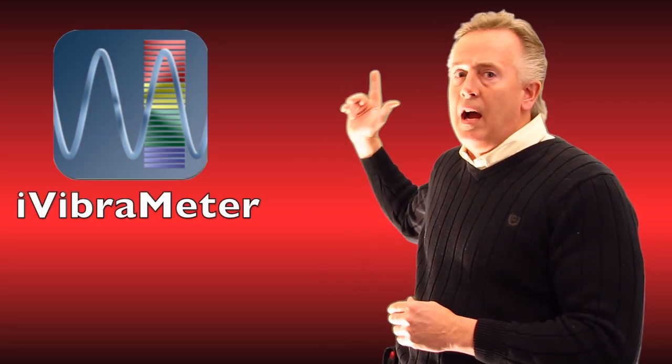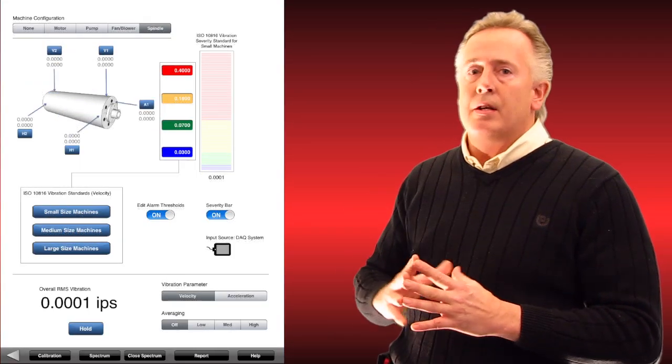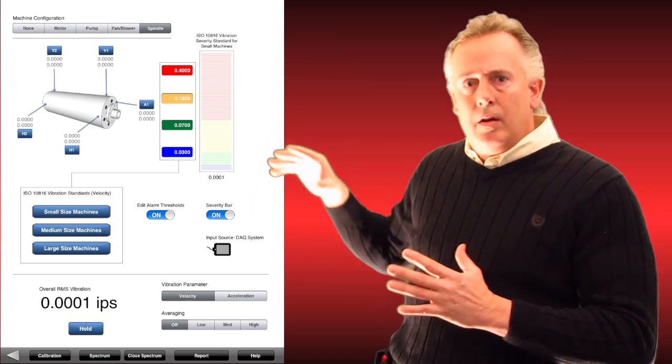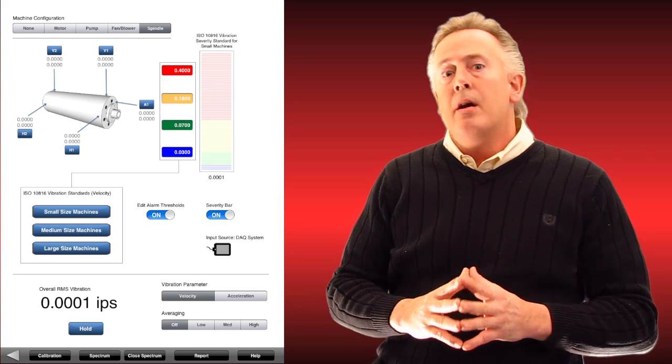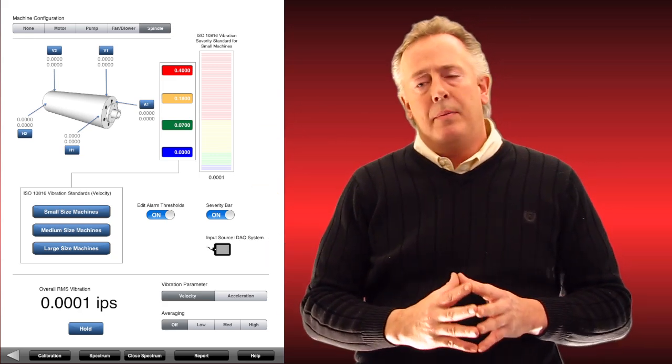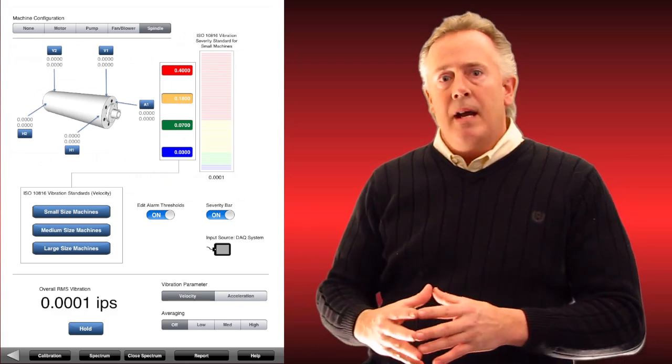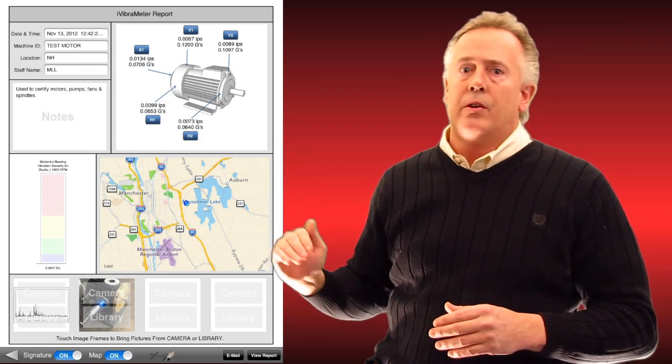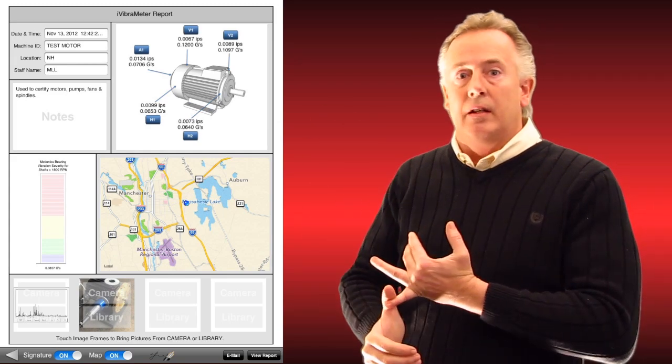This brings me to the next app called iVibroMeter, used for certification of pumps, motors, all kinds of different assets. It can be customized so you can set your red, yellow, green, and even blue settings where ISO standards may be. We've got a selection of five different ISO specs, but you can also enter and customize your own. This particular app is used specifically for people in the field that have to certify a motor or pump.